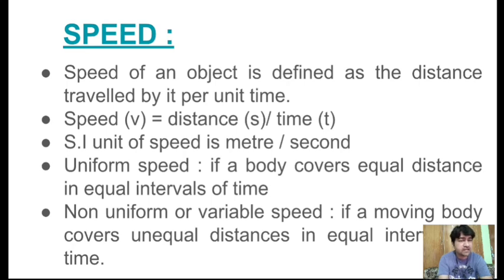Now, what is non-uniform or variable speed? If you start here and want to go to the library, your speed will not be uniform. Because you will have to change the speed. Your speed might be 20, sometimes 0, sometimes 40 kilometers per hour, sometimes 80 kilometers per hour. When you vary the speed, in equal time intervals the equal distance will not be covered. In the first hour you cover 40 kilometers, then the next hour you cover 60 kilometers — meaning unequal distances are covered in equal time intervals.